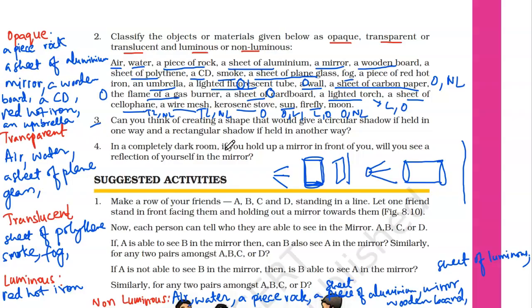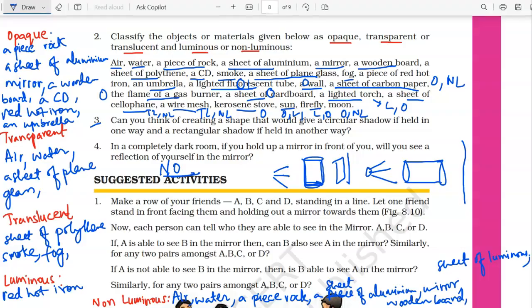Number four: in a completely dark room, if you hold a mirror in front of you, will you see a reflection of yourself? No, you will not be able to see your image. To see a reflection, a source of light is required, and in a dark room there is no source of light. To see any object or your reflection in a mirror, we need light. In the dark there is an absence of light, so you cannot see your reflection. I hope you've understood these answers. If you need any help, please mention it in the comment section. Thank you and take care.